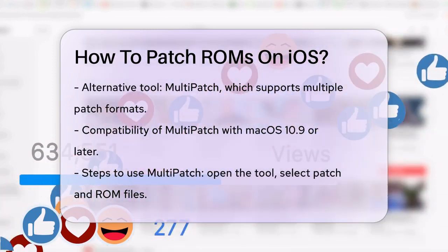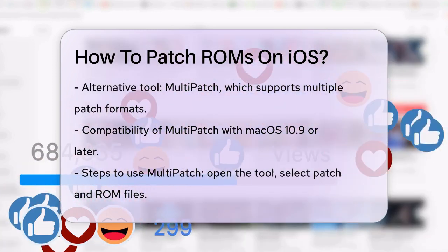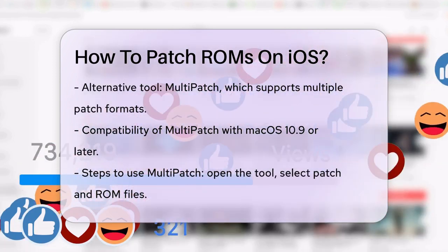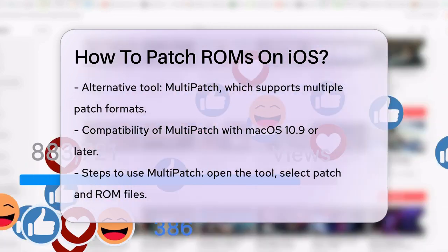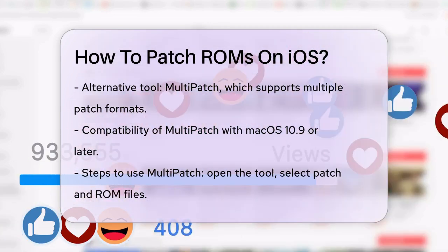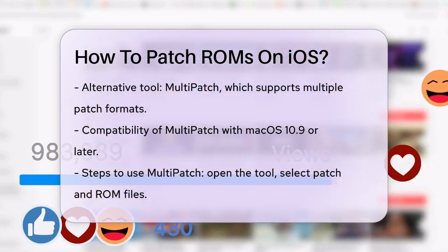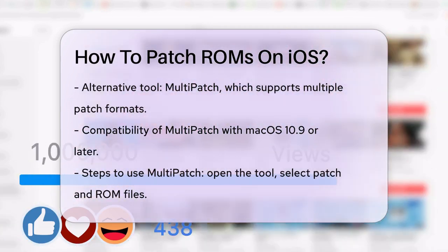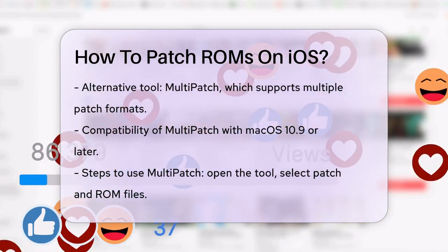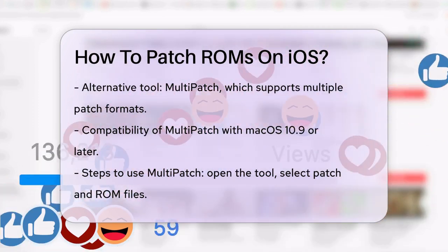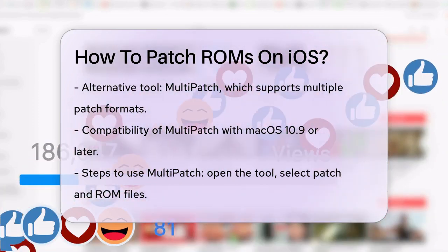When using Multipatch, ensure you have the patch and ROM files ready. Open Multipatch, select the patch file, and then choose the ROM file you want to patch. The program will apply the patch, and you'll have your modified ROM ready to use.